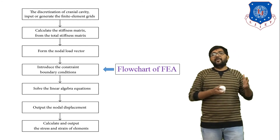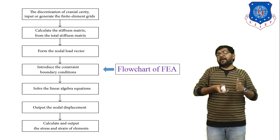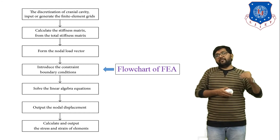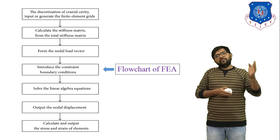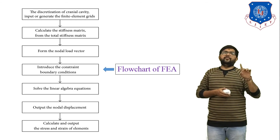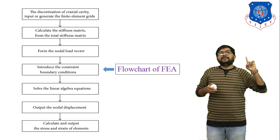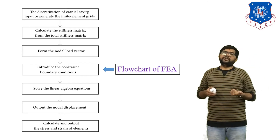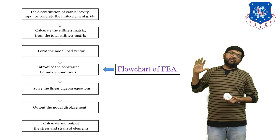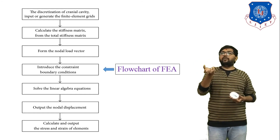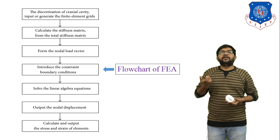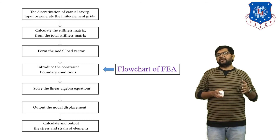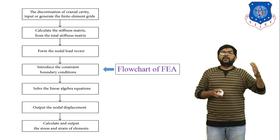In any FEA structural problem, we use these steps to find the solution. For any structural problem, we have to find four outputs: first, nodal displacement; second, stress; third, strain; and last, reaction force — if any force is applied in any direction, there is a corresponding reaction force in the opposite direction. So these are the simple steps of the FEA problem to solve any structural problem.